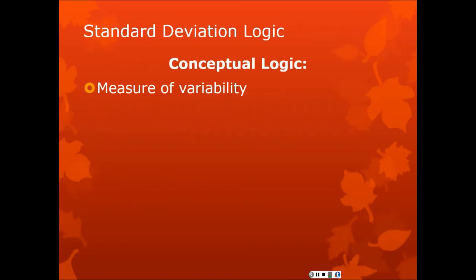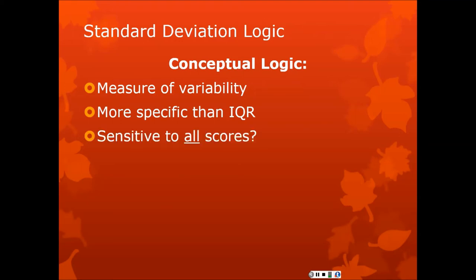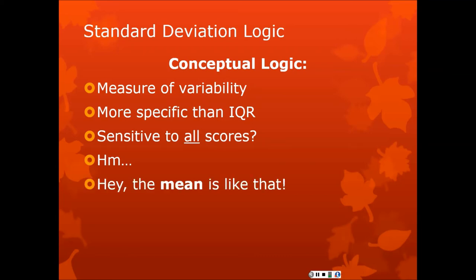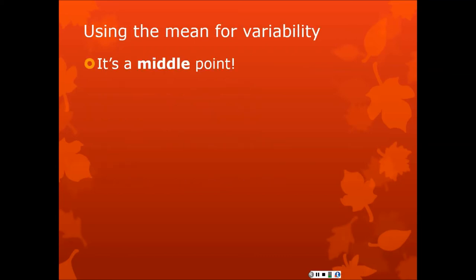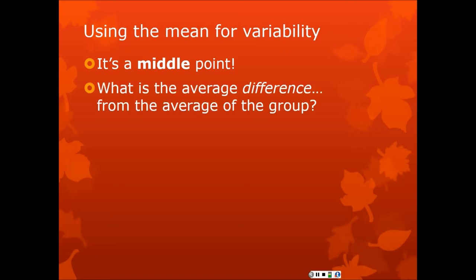Conceptually, the standard deviation is a measure of variability — more specific than the interquartile range, more sensitive to all the scores. We start with the mean to calculate the standard deviation. The mean itself is a middle point, so to calculate variability you start with a middle point and measure deviations from it. We ask: what is the average difference of scores in my distribution from the average of the group? What's the average difference from the average? To what extent do scores deviate from average?